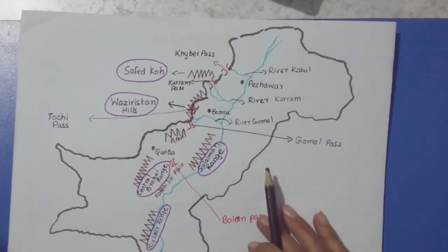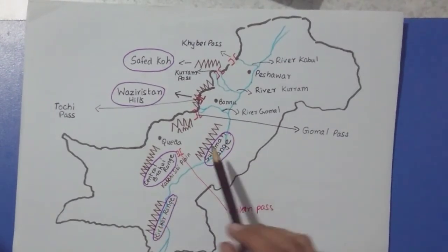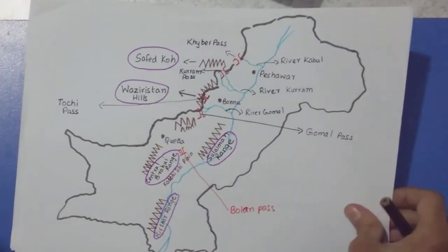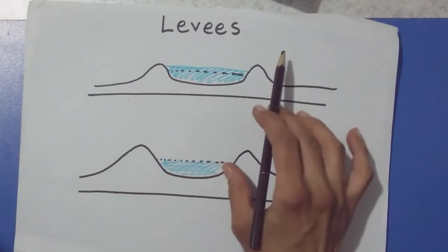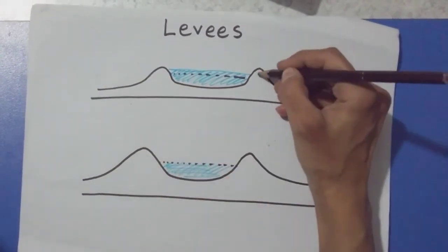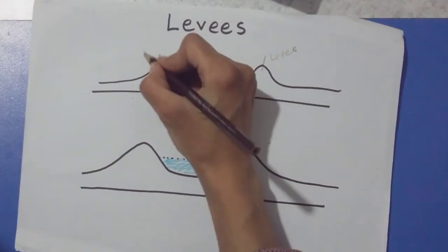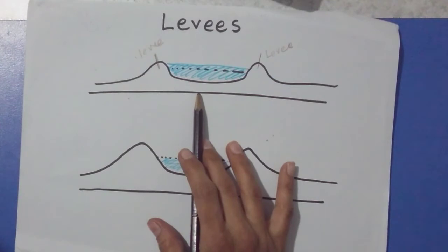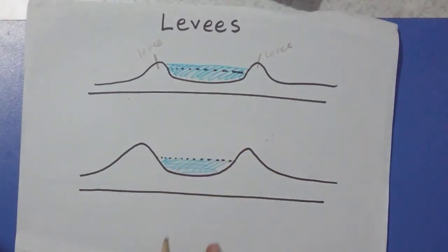One thing I wanted to tell you: if someone is wondering where the Suleiman ranges are, these are the Suleiman ranges here, and this is the Kirthar range here. The Piedmont Plains are found at the foothills of the Suleiman and Kirthar ranges. Now moving on to levees. In very simple terms, what is a levee? It is a raised ridge on either side of the river. This is called a levee.